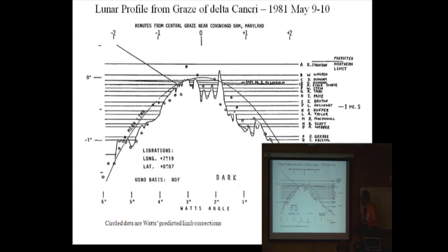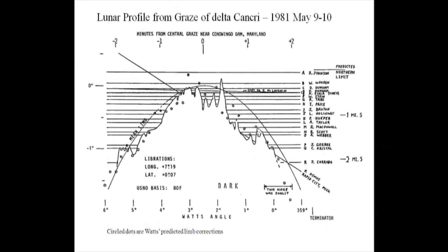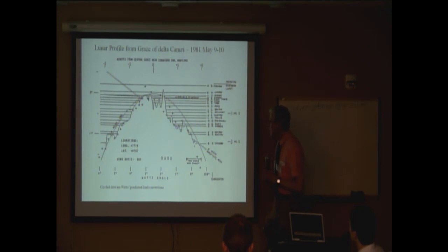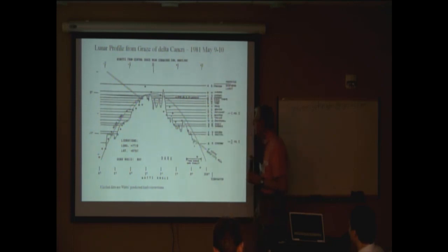You get multiple reappearances of the star in the mountains and craters along the near north or south pole. This shows one example of grazing occultation reduction where we set up about a dozen observers spread across the path. This shows plots of their distances from the predicted limit line versus the time relative to central occultation, so you can see how it traces out the lunar profile in great detail — though keep in mind there's an exaggeration of about 50 to 1 in the vertical direction, so the lunar topography is really quite gentle.